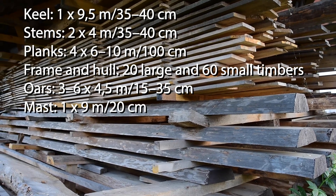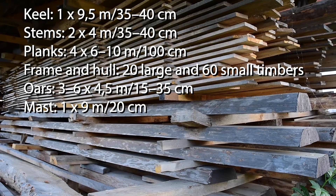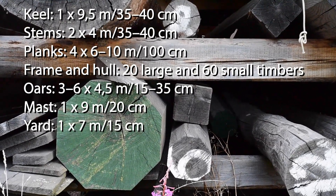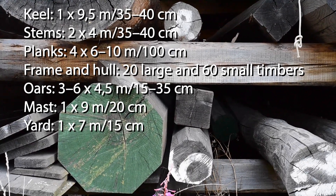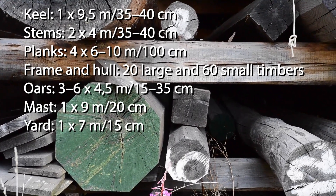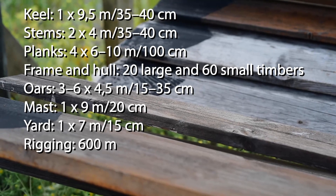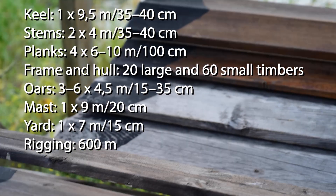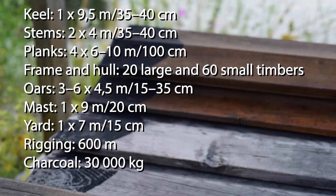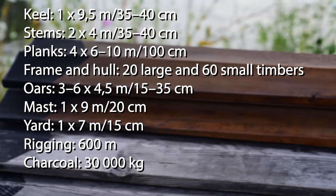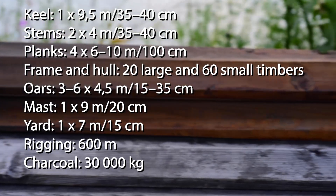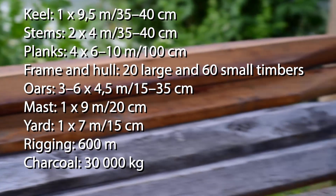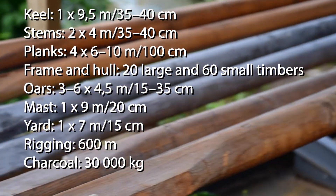One log of pine, circa 9 meters long and 20 centimeters in diameter. One log of pine, circa 7 meters long and 15 centimeters in diameter. In addition, about 600 meters of tree bark fiber was needed to make the ship's rigging, and about 30,000 kilograms or 41 cubic meters of wood was needed for the charcoal used in making the ship's iron parts, such as rivets and spikes.